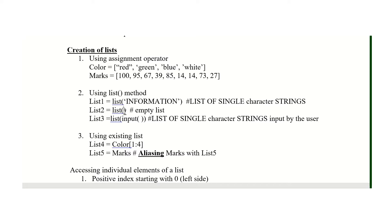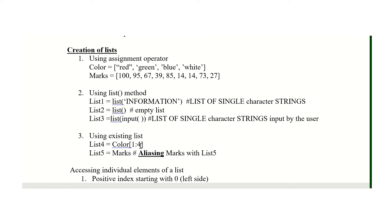You can append or add elements to an empty list later on. The third way is to use an existing list to create a new list. You can extract some elements using slicing and assign them to another list, or you can assign all elements of an existing list to another list, effectively creating an alias of the existing list.